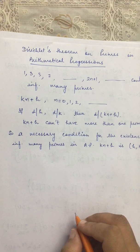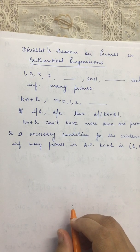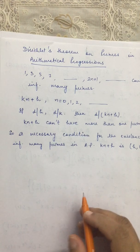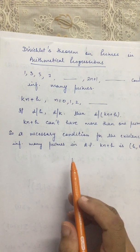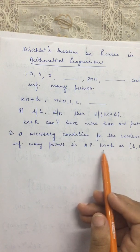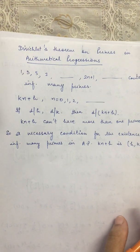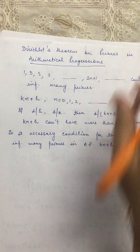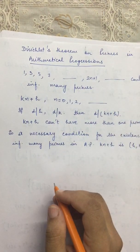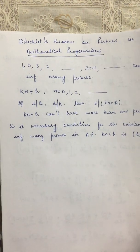Now Dirichlet proved that this condition is also sufficient, which means if gcd(h, k) = 1 then there exist infinitely many primes in the arithmetic progression kn+h. This result is known as Dirichlet's theorem. We will prove this theorem in this chapter later on.